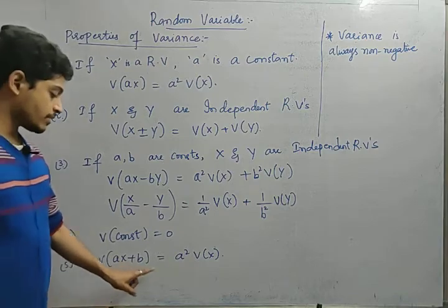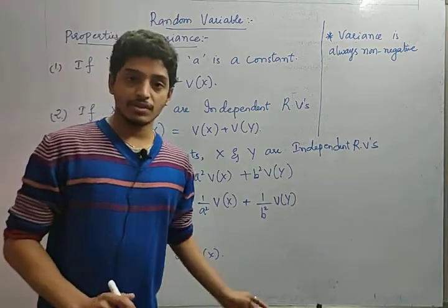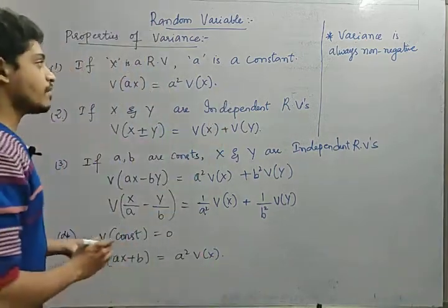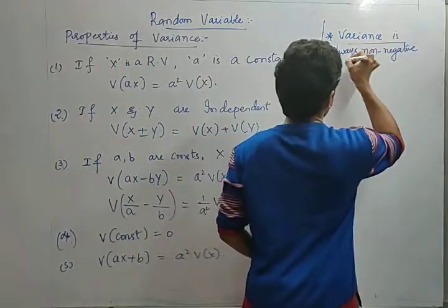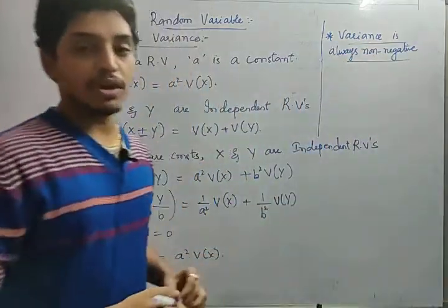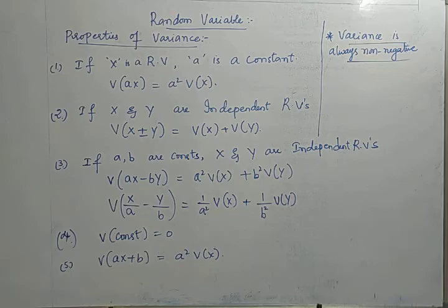Variance of a constant is always 0. Variance of aX + b equals a² times Var(X). Always remember that variance is always non-negative — it is always a positive value. These are the important properties, and now let us see problems on random variables.